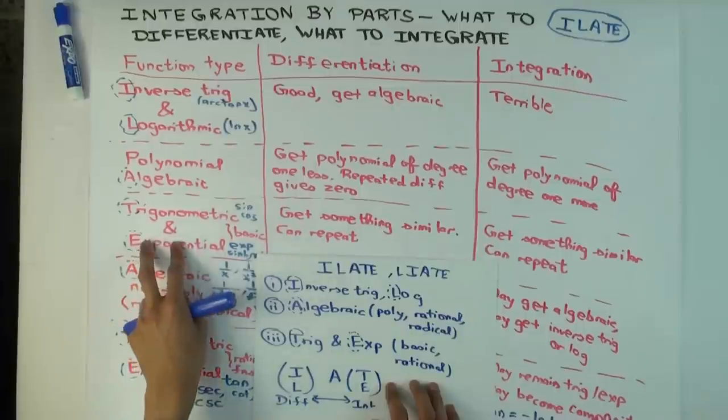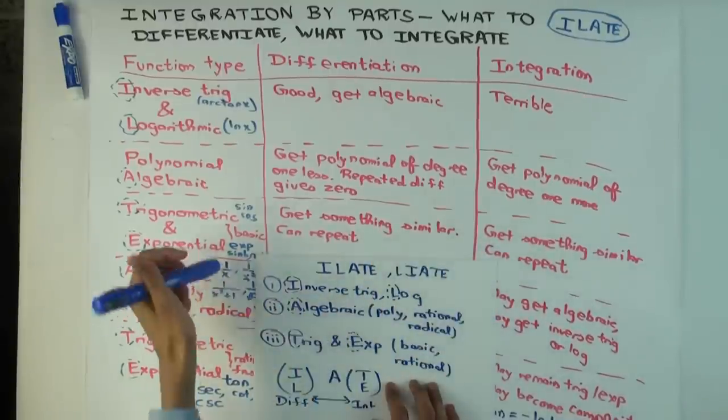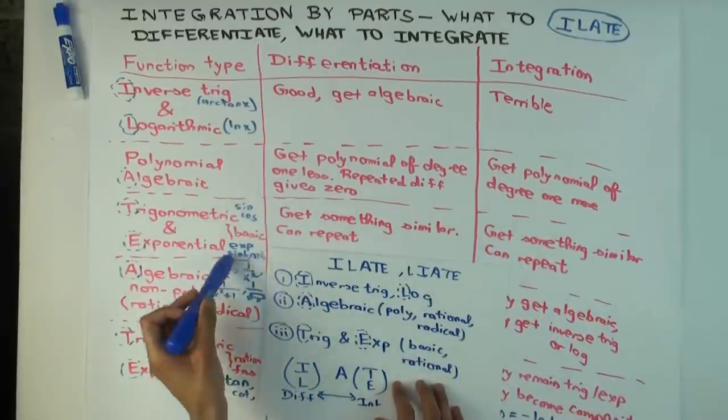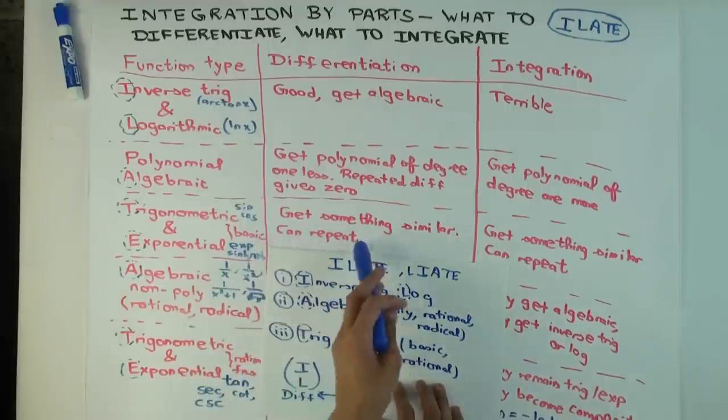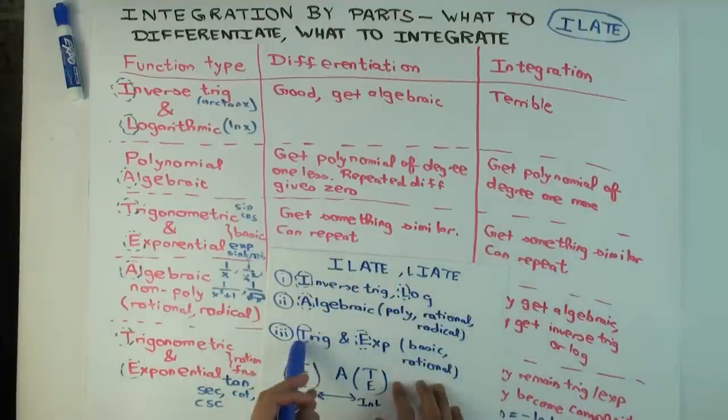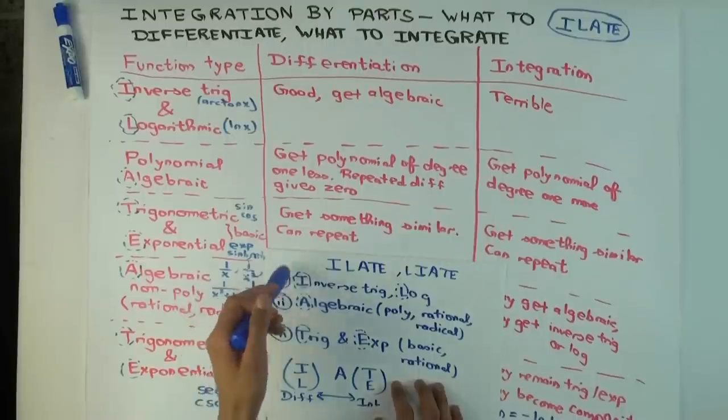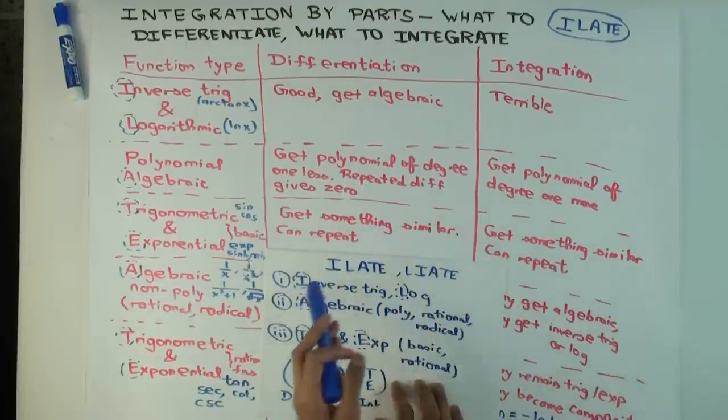Whereas for trig and exponential, whether you differentiate or integrate, the complexity doesn't change. For sine, cosine, exponential, hyperbolic sine, hyperbolic cosine, when you differentiate it remains similar and integrate it remains similar. So these are functions which you prefer to integrate, because all the other ones do get simpler when you differentiate, and these don't care.